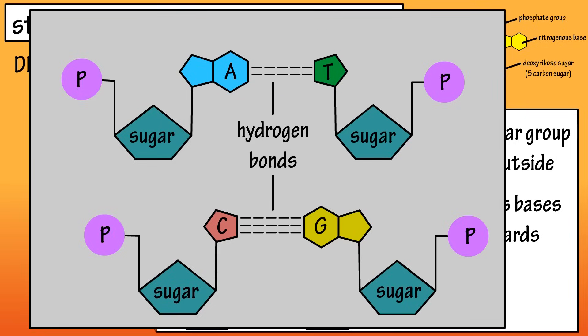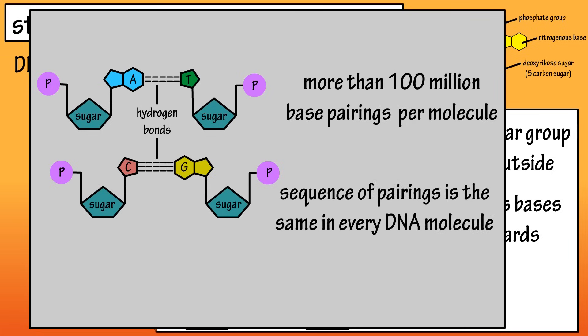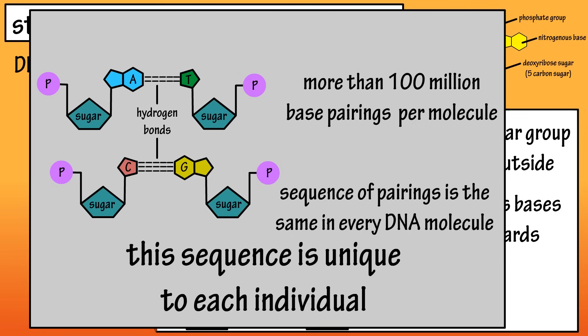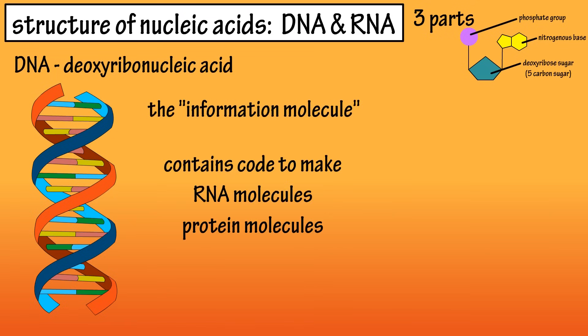It's estimated that DNA molecules contain more than 100 million of these base pairings. And in one individual's body, the sequence of the base pairings is the same in every DNA molecule, so this sequence of base pairing is unique to that individual. DNA is often called the information molecule because it contains the master code needed to make various RNA molecules and protein molecules in the body.